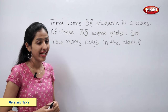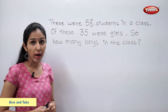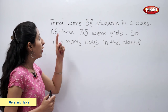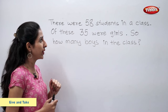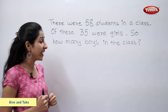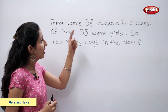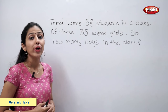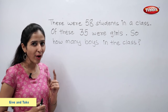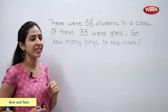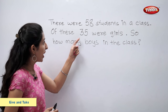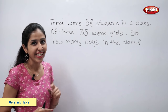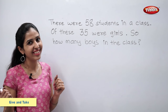Students, in this sum, we have to find the number of boys. We have a total of 58 students. Out of these, 35 were girls. So, to find the number of boys in the class, we will subtract 35 from 58 using tens and ones.